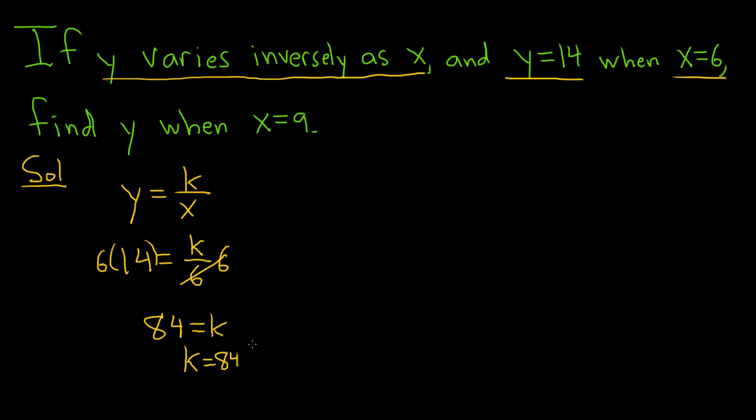So now we can take the k and plug it back in. So we have y equals 84 over x. And the next step is to find the answer. So it says find y when x is equal to 9. So in this case, all we have to do is plug in 9 for our x. So we get 84 over 9 as our answer.